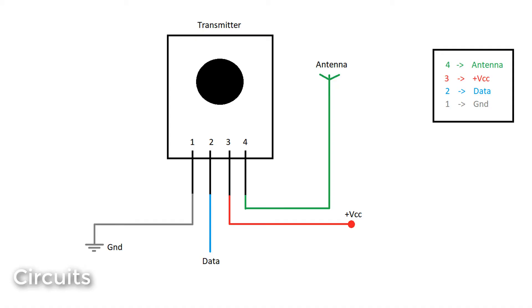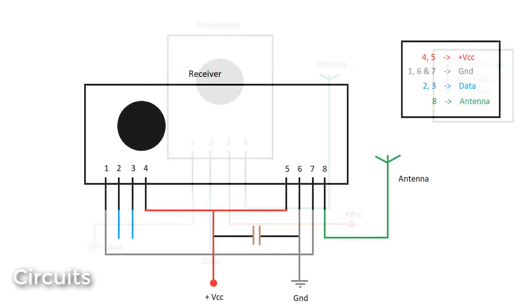This is the basic transmitter circuit: two pins for the power supply, one input data pin for the transmitter, and the fourth pin is your antenna pin. On your receiver circuit, there are three ground pins, two voltage pins, two data pins, and one pin for your antenna.